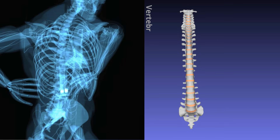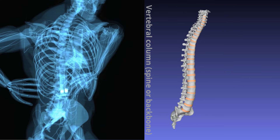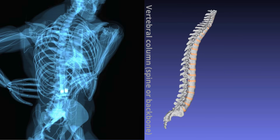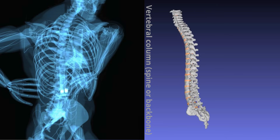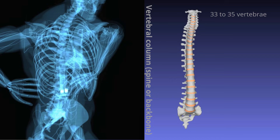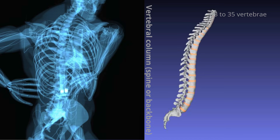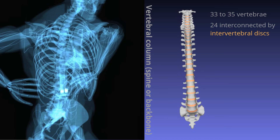The vertebral column, commonly known as the spine or backbone, provides essential structural support for maintaining an upright posture and enabling flexible motion. It is composed of 33 to 35 vertebrae, with 24 interconnected by cartilaginous intervertebral discs.